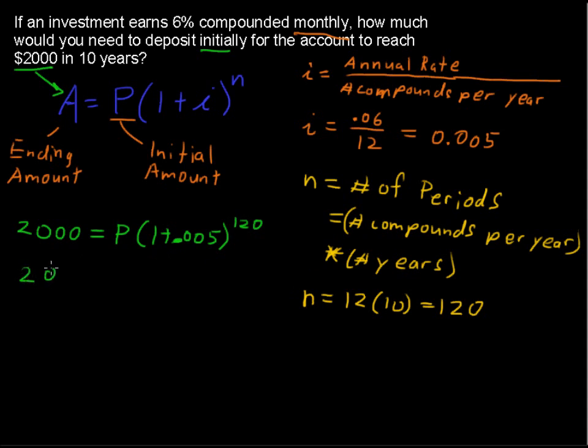I would suggest doing that on your calculator because that would take a while to raise 1.005 to the 120th power. What you get is 2,000 equals P times 1.8193967. That's 1.005 raised to the 120th power.